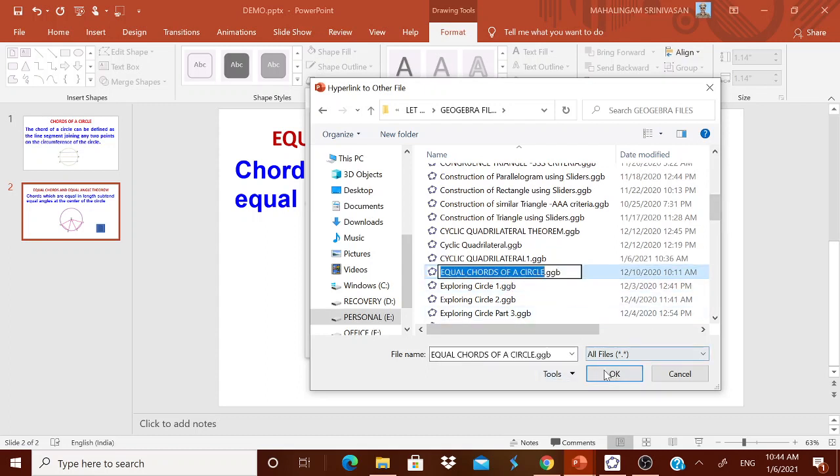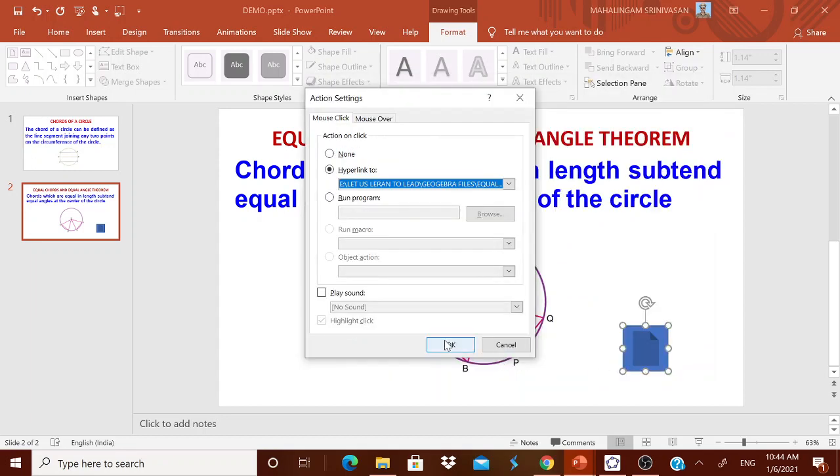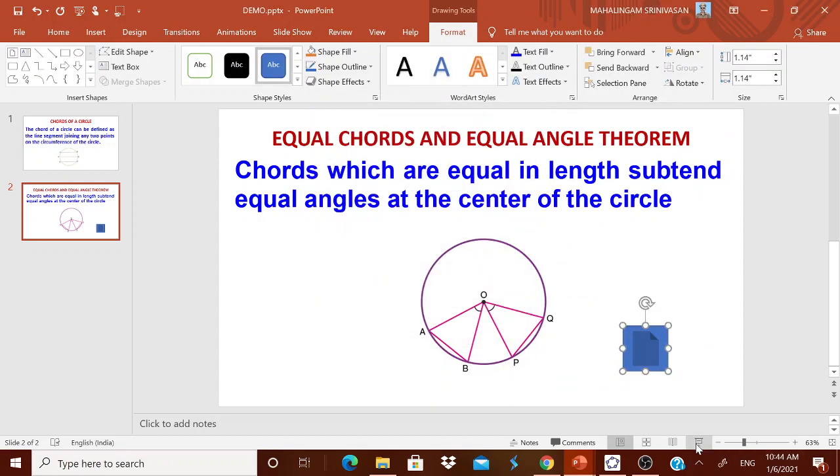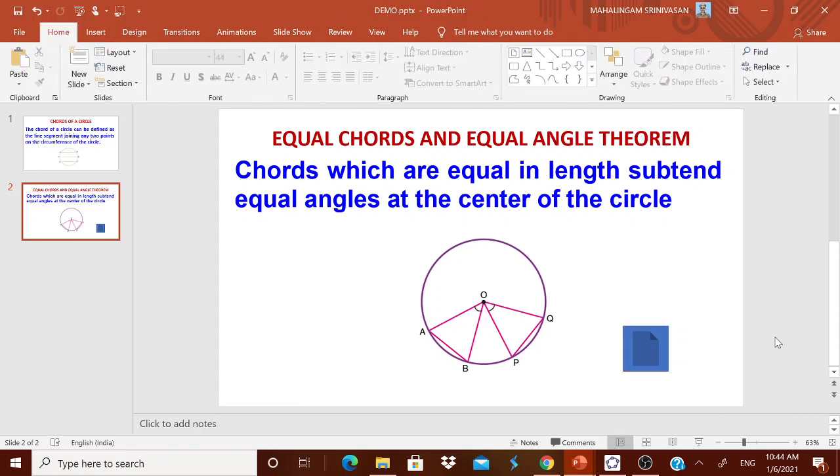I have selected it and I am clicking okay. And I am clicking okay. Now it has come now. You see, whenever I am putting it here. You see, Let us learn to lead GeoGebra file, equal chord of a circle. It is coming.